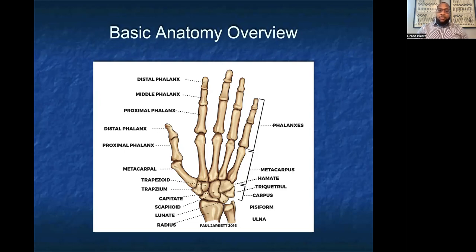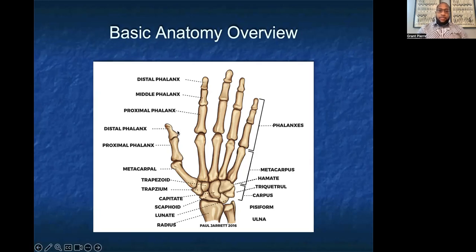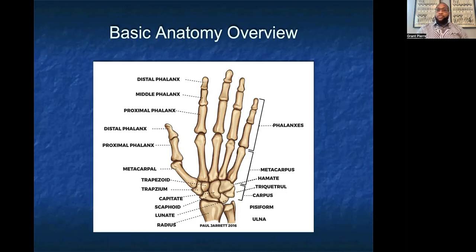Moving up, we have the five metacarpal bones corresponding to our five fingers. Fractures can occur at the head, neck, or base of these bones. The thumb has a proximal and distal phalanx, while the second through fifth digits each have a proximal, middle, and distal phalanx. This is important to remember when looking at these images.